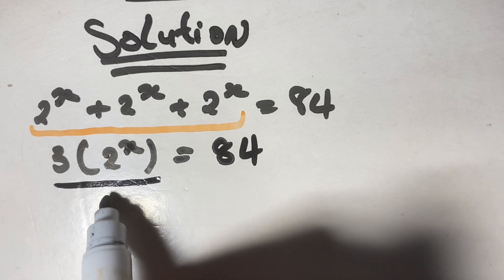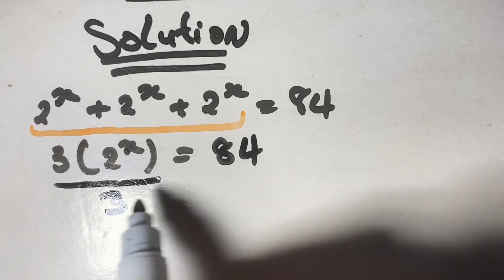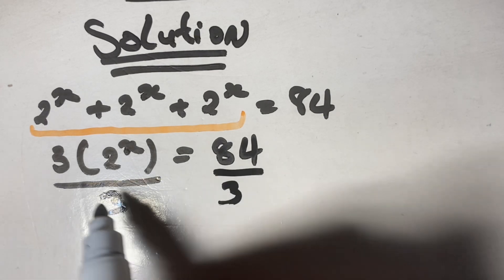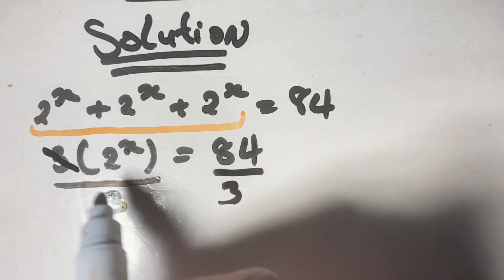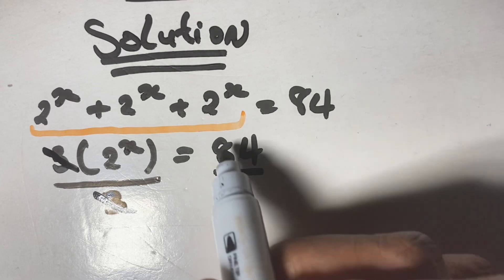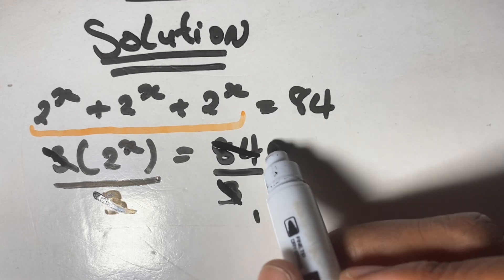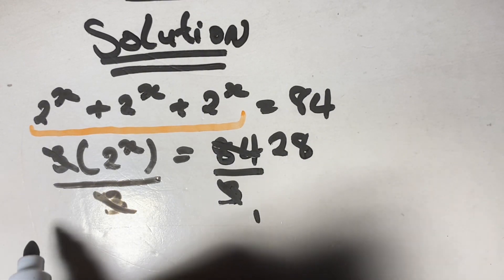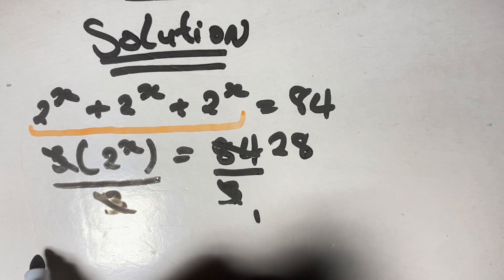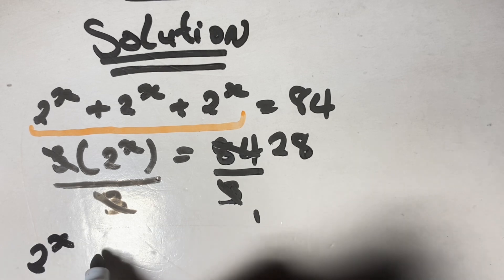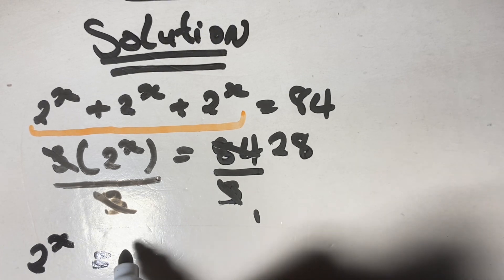Then dividing both sides by 3, we cancel the 3 on the left, and 3 into 84 gives us 28. So 2 to the power of x equals 28.